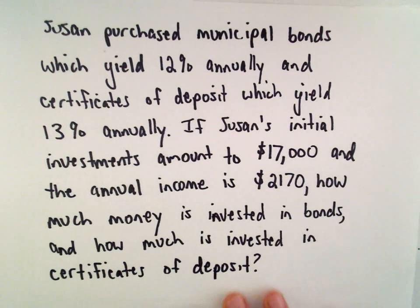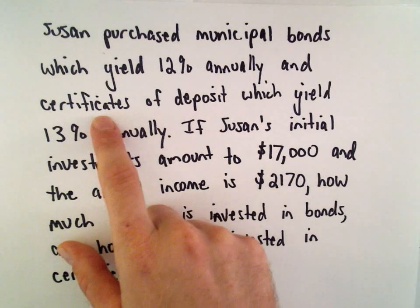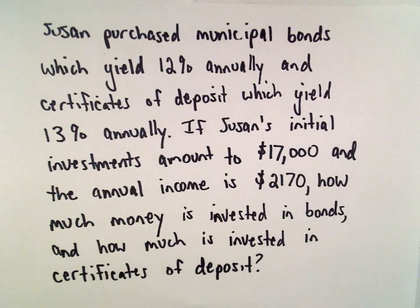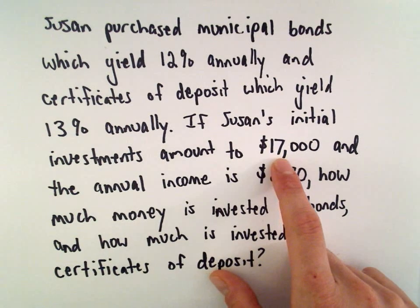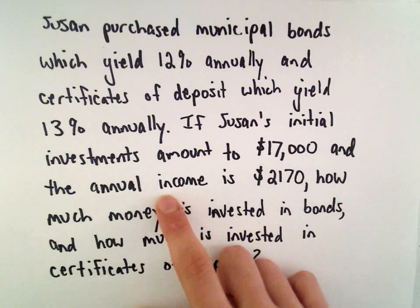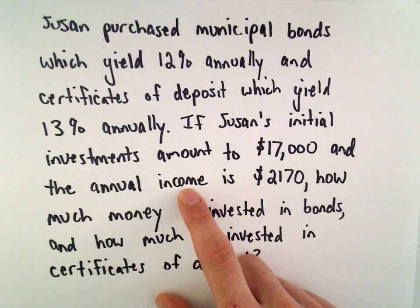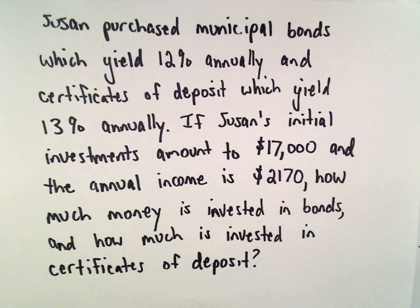Suppose Susan purchased bonds which yielded 12% annually and certificates of deposit which yield 13% annually. If we know that Susan initially invested $17,000 total and the income or the interest that she earned on these bonds and certificates of deposit, we know that's $2,170.